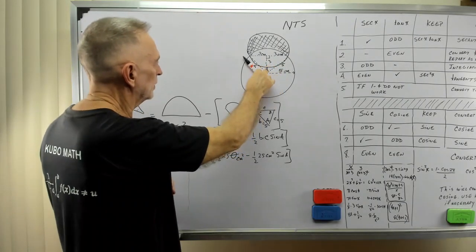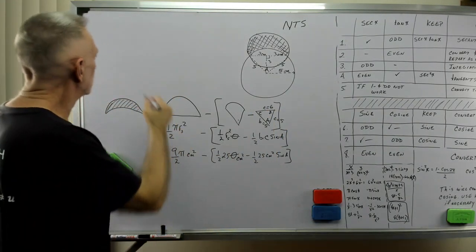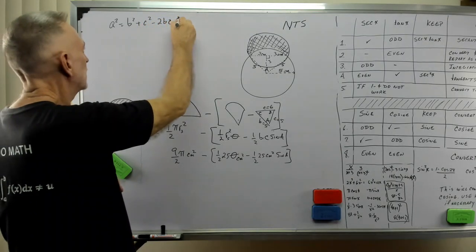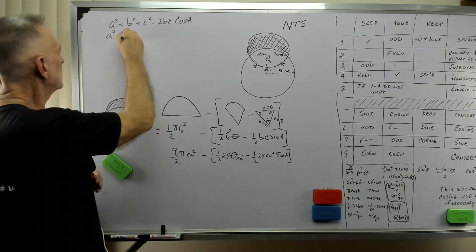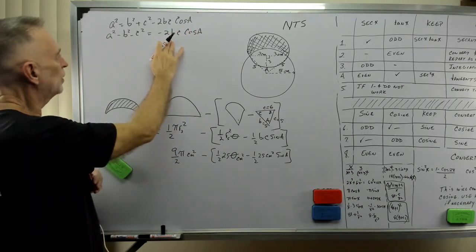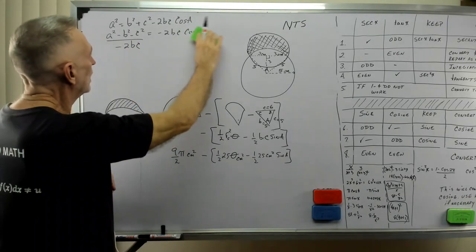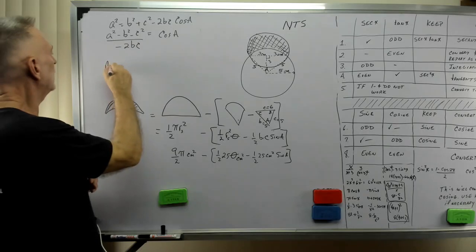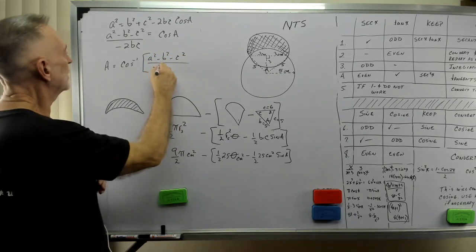We're going to have to find A, and then convert that to radians here. How are we going to do that? We know this side, this side, and of course this side is six. Three plus three. Hey, we know three sides. Law of cosines. So we have A squared equals B squared plus C squared minus two B C cosine A. So we're going to solve this for cosine A. So we're going to subtract A squared minus B squared minus C squared equals minus two B C cosine A. And now we're going to divide both sides by negative two B C. And that equals cosine A.